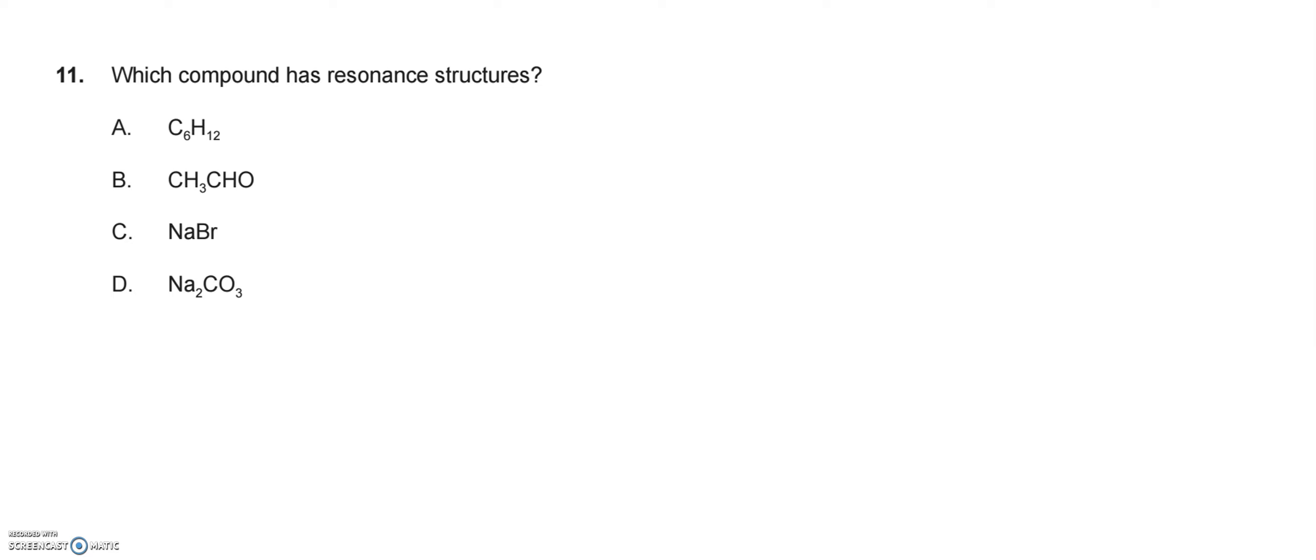If we're dealing with resonance structures, that means I'm going to have to draw out Lewis structures for covalent molecules. Now I can rule out right away that NaBr is a very ionic compound. I'm not going to draw a Lewis structure because the bromine is so much more electronegative than the sodium. It's going to form ions exchanging electrons rather than sharing them. So I can ignore that one right off the bat.